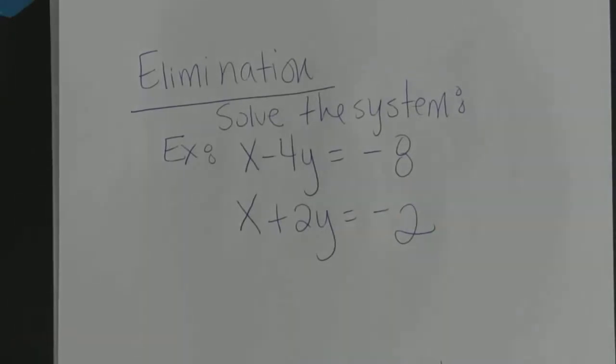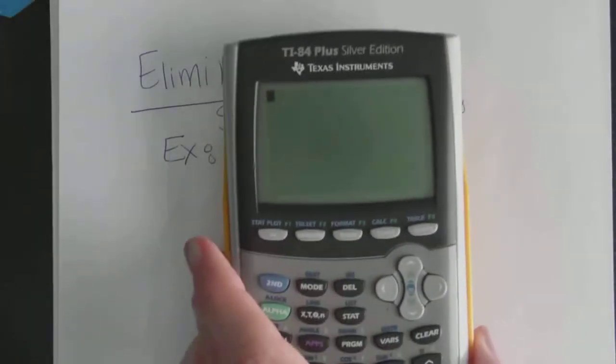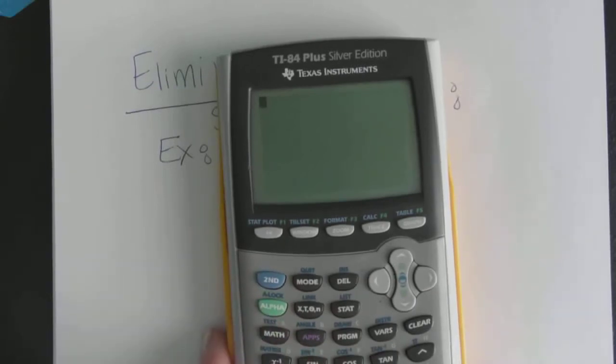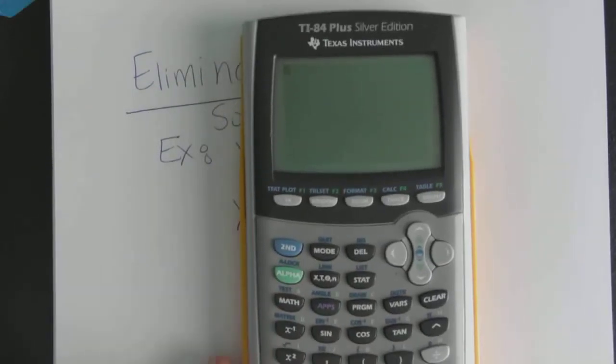We're gonna solve the system x minus 4y equals negative 8 and x plus 2y equals negative 2 and we're gonna use elimination. So don't need to do anything by hand that's for sure, we're just gonna bring our TI here.